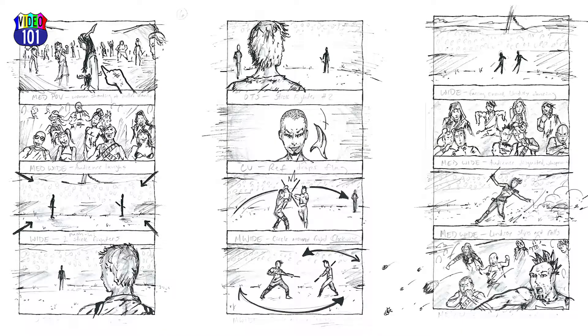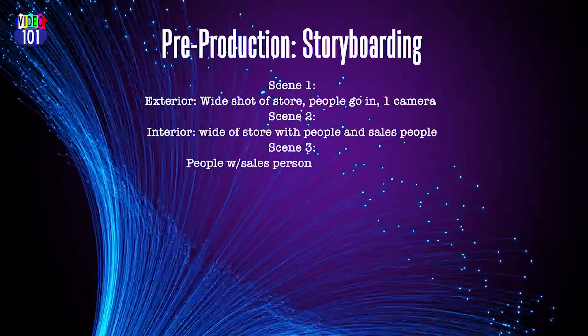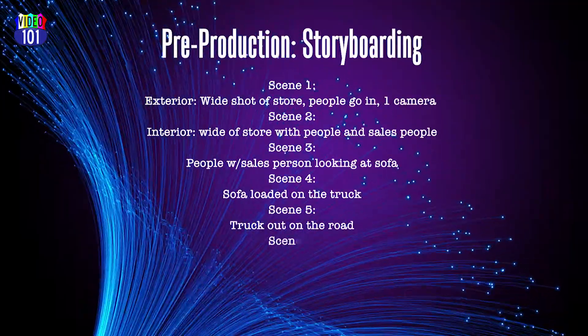One of the questions that comes up is: do you have a storyboard? In movies, a storyboard can literally be a series of animated or very well-crafted pictures that show every scene — basically showing you what is going to be in your video when it's done.